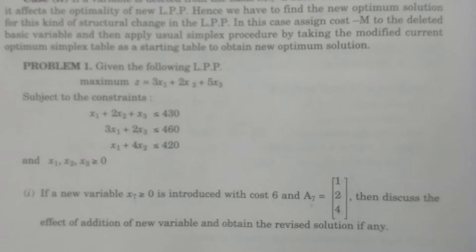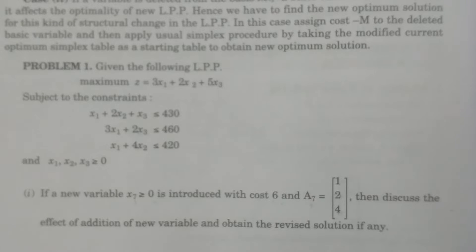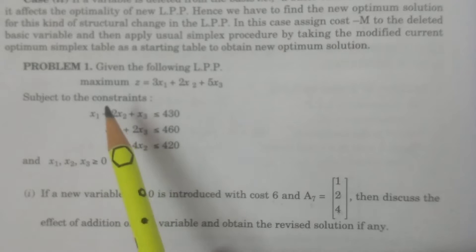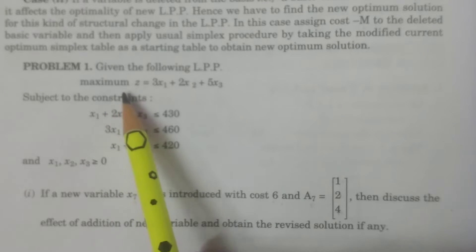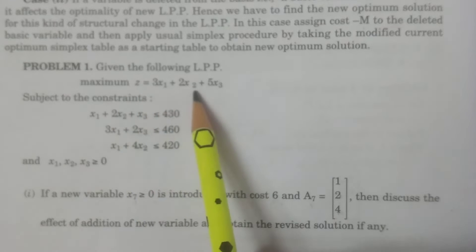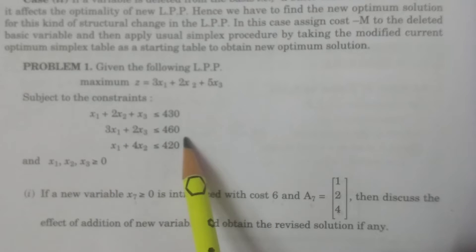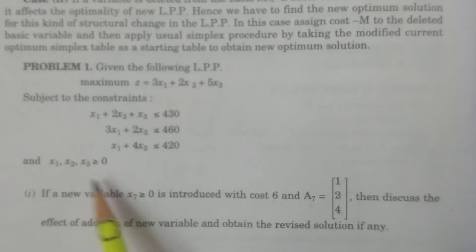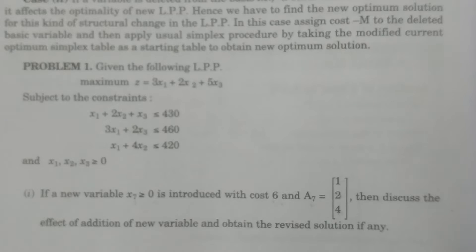Welcome to BSC Statistics students. In this class, I explained one of the problems on structural changes due to the deletion of a variable — deletion of a variable in the post-optimal analysis. This is the given problem: Maximize z = 3x1 + 2x2 + 5x3, with x1, x2, x3 ≥ 0. This is the linear programming problem given to us.